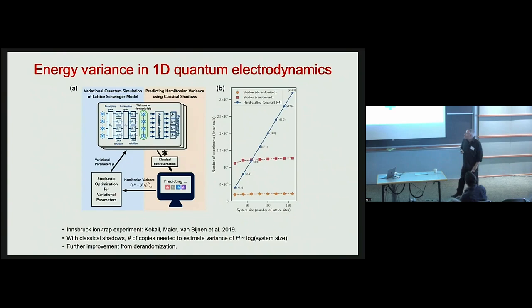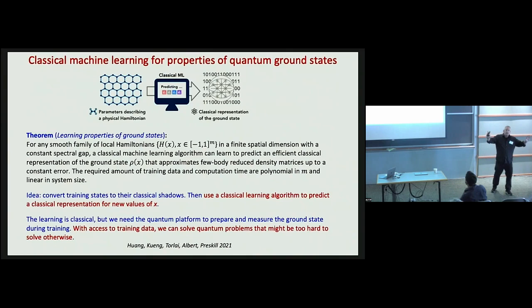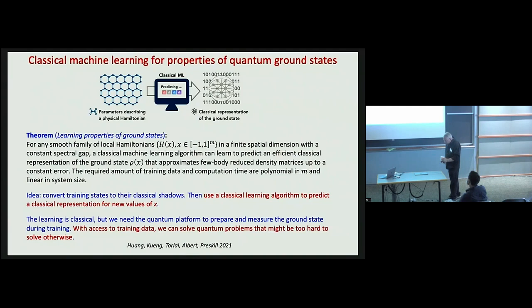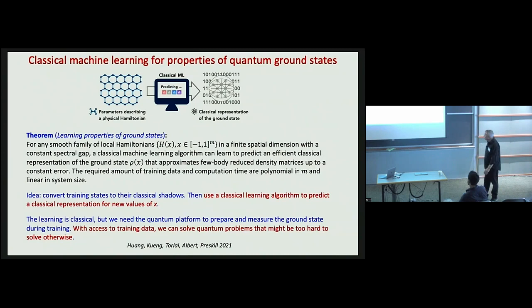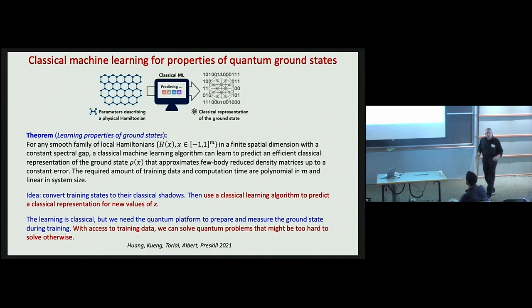Now that we've seen it's possible to translate a many-qubit quantum system to succinct classical data while retaining the ability to predict many properties of the state, it's natural to ask whether we can use classical algorithms to attack quantum problems where the input is such a classical shadow description. There has been a lot of interest in using classical machine learning methods to study problems in quantum many-body physics. Most of that work is heuristic, but we found that in some cases it is possible to give a rigorous guarantee that classical ML gives reliable results.